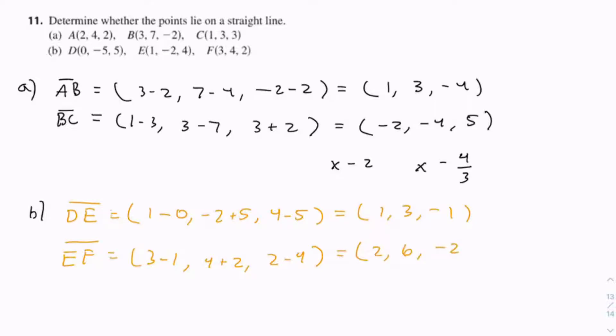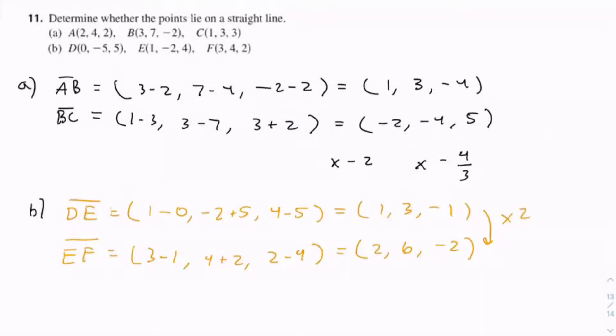And notice if you multiply DE by 2, you get this. 1 becomes a 2, 3 becomes a 6, negative 1 becomes a negative 2.